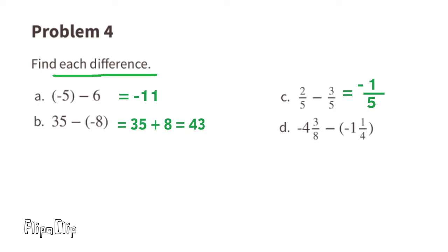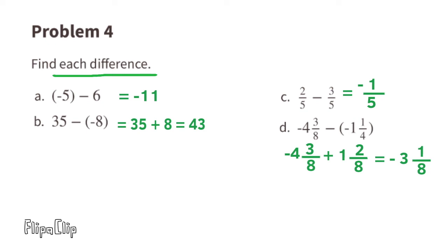Part d: negative 4 and 3 eighths minus negative 1 and 1 fourth. That's the same as negative 4 and 3 eighths plus the opposite of negative 1 and 1 fourth. Since the opposite of negative 1 and 1 fourth is positive 1 and 1 fourth, using 8 as the common denominator the expression reads negative 4 and 3 eighths plus 1 and 2 eighths. Negative 4 plus 1 is negative 3, and negative 3 eighths plus 2 eighths is negative 1 eighth, so the difference is negative 3 and 1 eighth.